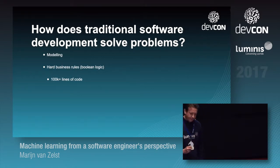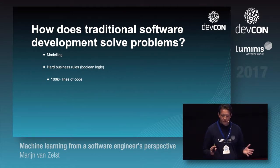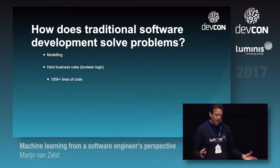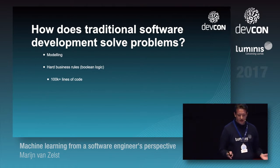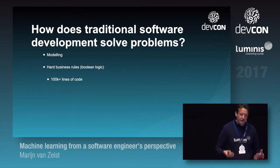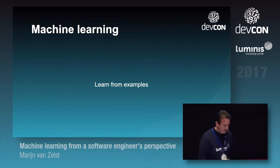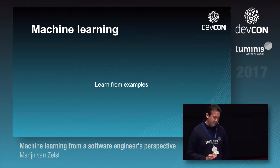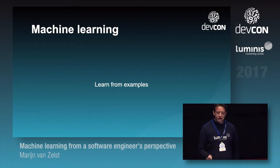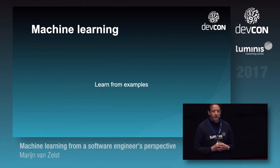Let's look at how software developers currently solve problems. When we create software, we start with modeling — we abstract things from our problem domain, create an application model, apply business rules, and that leads to thousands of lines of code and big development teams. With machine learning, we learn from examples. We don't model or define business rules; we just input the raw data and let the machine figure out the relationship between the data and the answer.